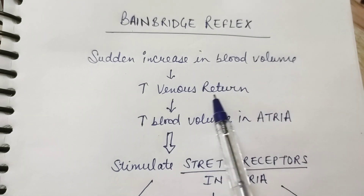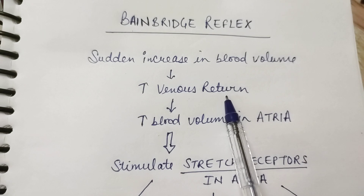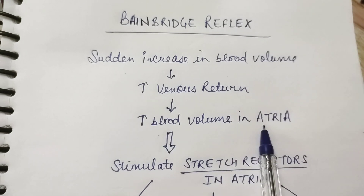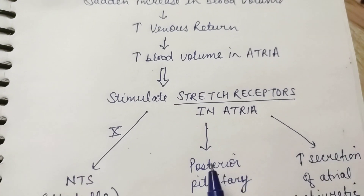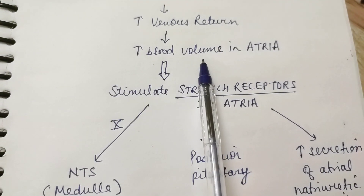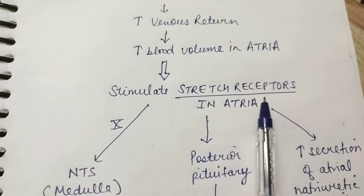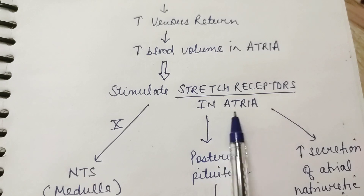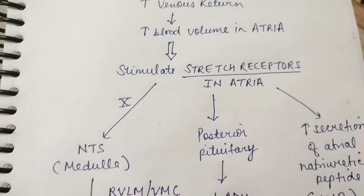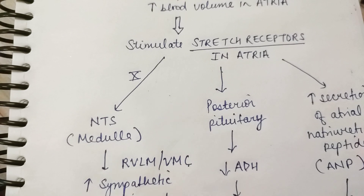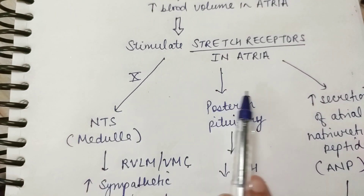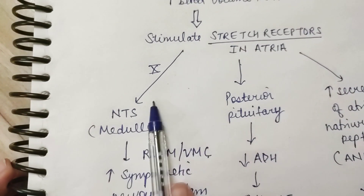So what happens is: whenever there is an increase in blood volume, there is an increase in venous return to the heart, and there is an increase in blood volume in the atria. Whenever there is this increase in blood volume in the atria, there are stretch receptors in the atria which get stimulated.